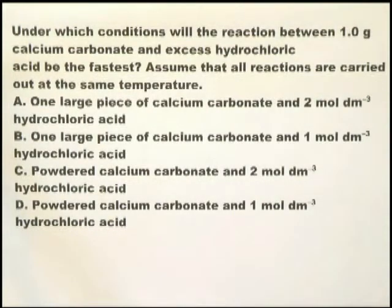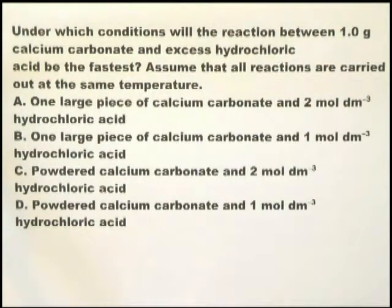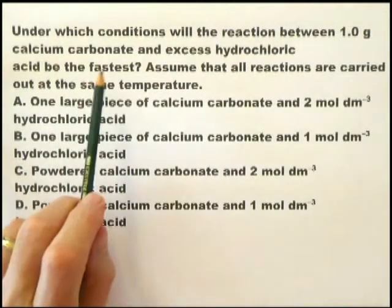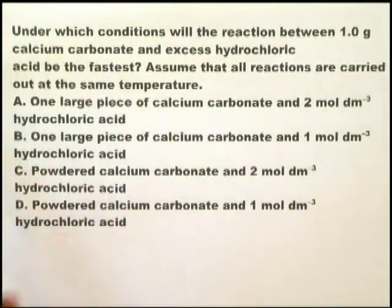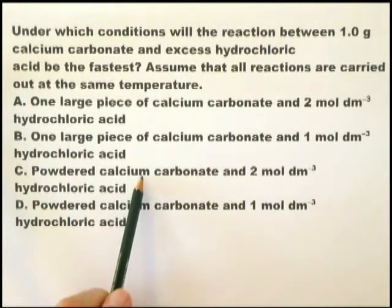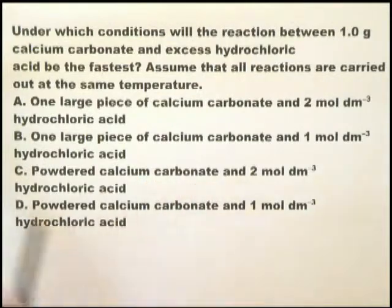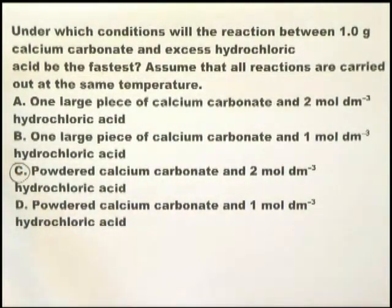In this question, the examiner is testing whether you understand the difference between a large piece of calcium carbonate and powdered calcium carbonate in terms of reaction rates, and the difference between 1 mol dm⁻³ and 2 mol dm⁻³ hydrochloric acid. For the fastest rate, it's obviously got to be powdered calcium carbonate and the strongest hydrochloric acid — so that must be option C: powdered calcium carbonate with 2 mol dm⁻³ hydrochloric acid.